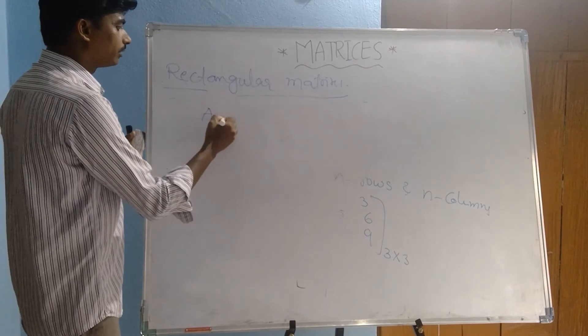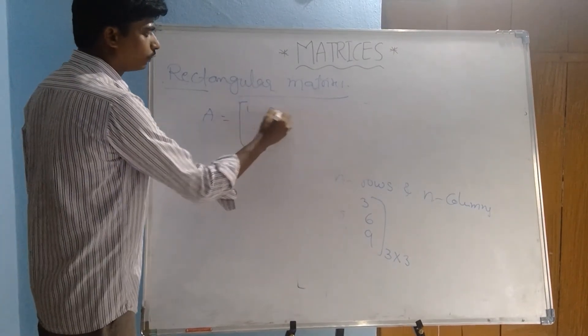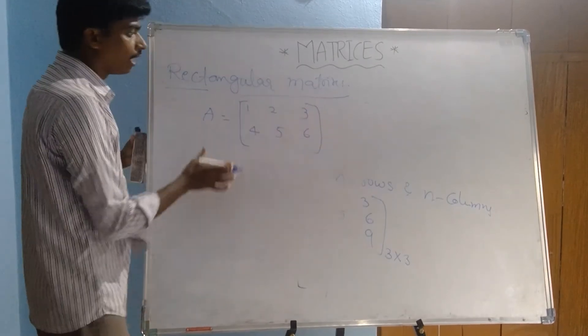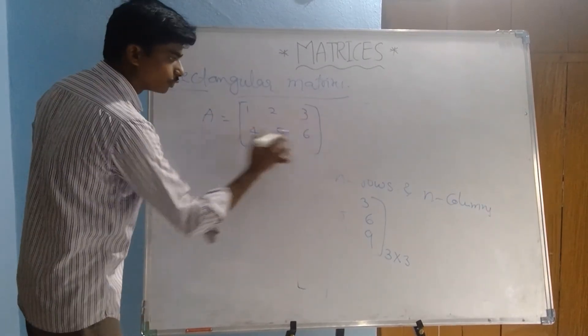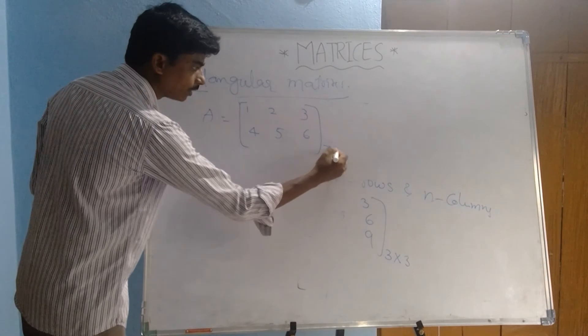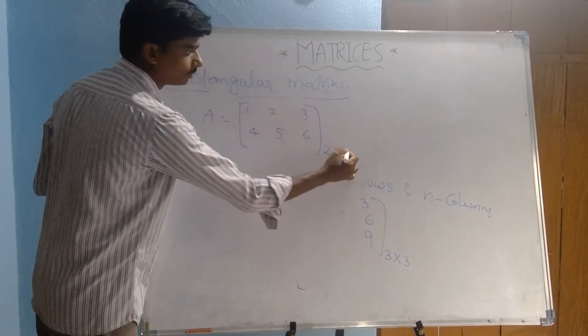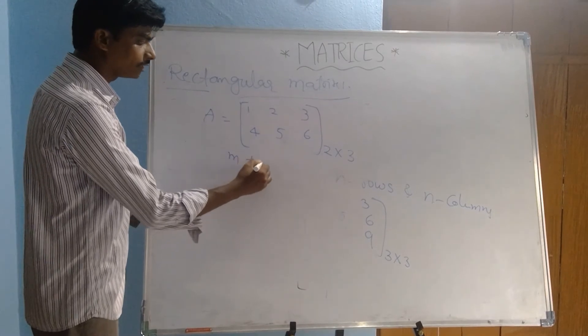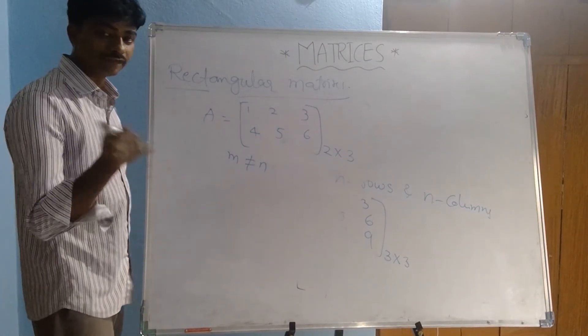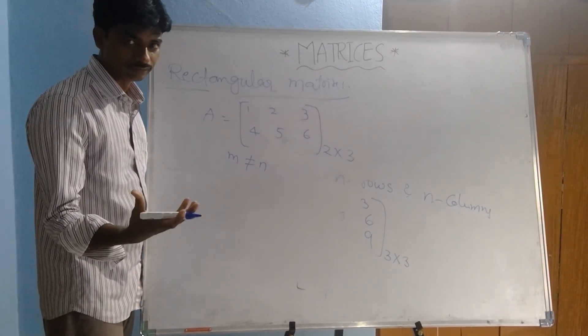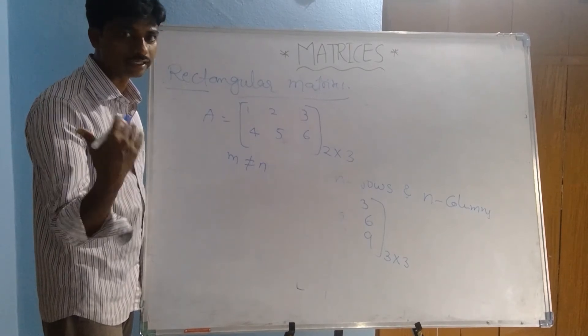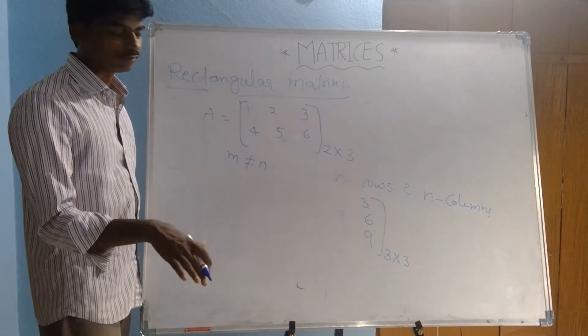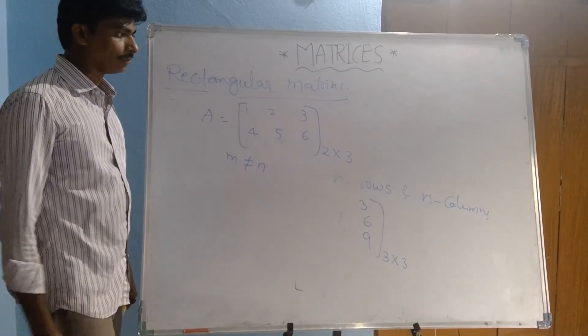This is example A: 1, 2, 3, 4, 5, 6. See here, how many rows? Two rows only. How many columns here? Three columns. Now we have M not equal to N. Square matrix: M equal to N, rows and columns are equal, that is called as square matrix. Rows and columns are not equal is called as a rectangular matrix.